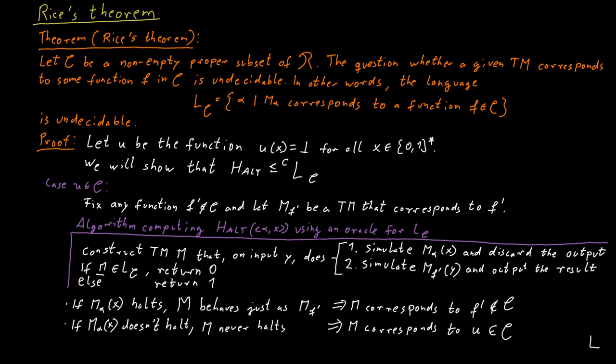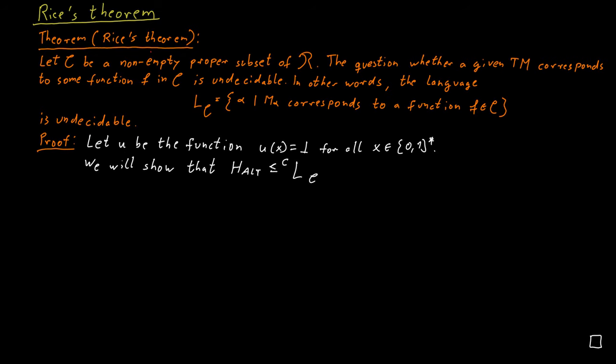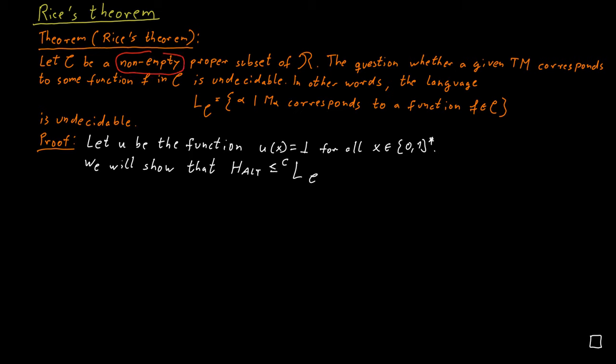Before we move on, let me give some additional comments on Rice's Theorem — in particular the conditions mentioned: that C needs to be a non-empty proper subset of R. Why include the terms 'non-empty' and 'proper'? We use the fact that C is non-empty when, in the first case, we needed to fix a function f' contained in C. We use the fact that C is proper when, in case two, we needed a function f' that is not in C.